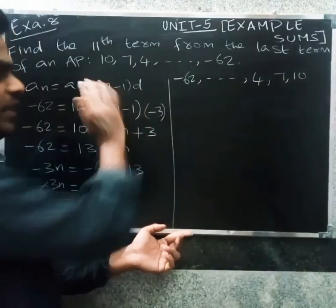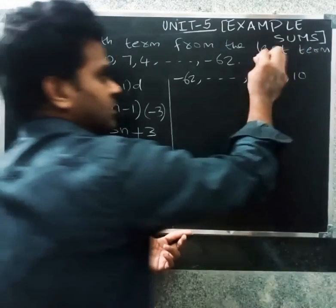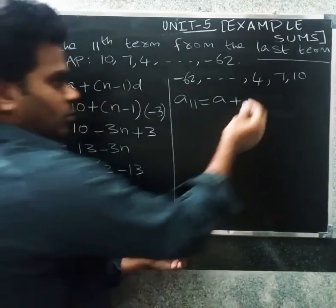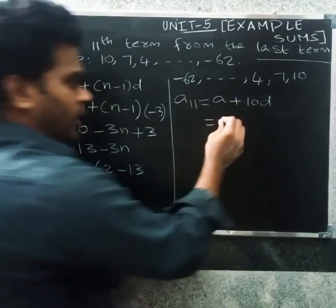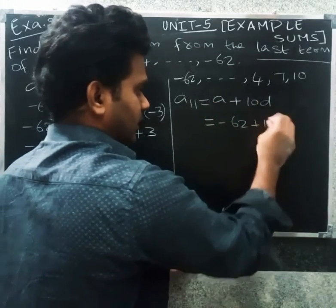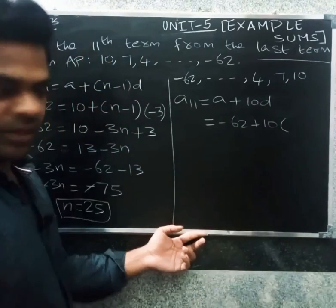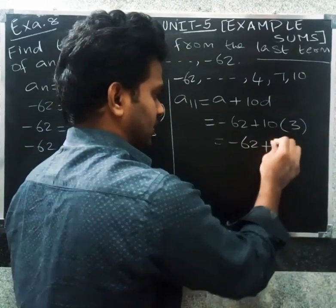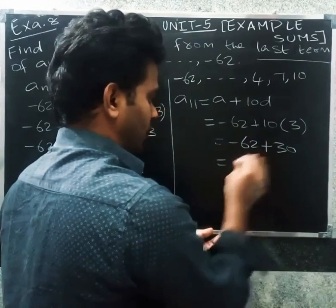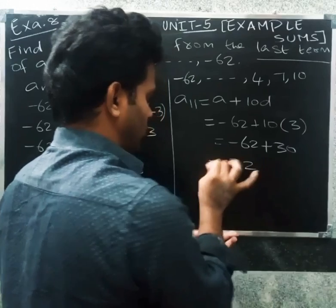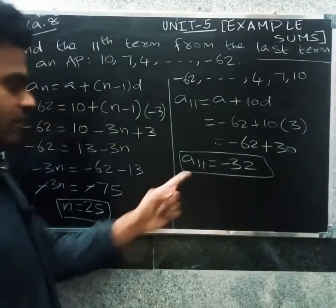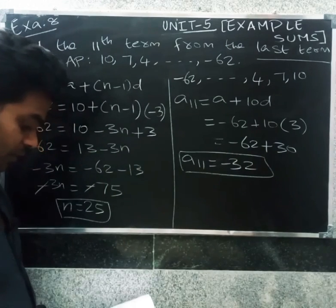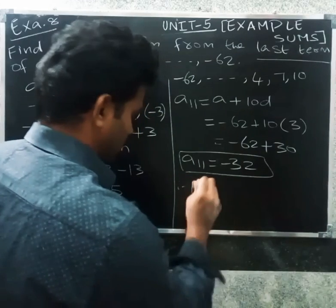To find the 11th term from the last, we reverse and use a₁₁ = a + (n−1)d, where a = −62 and d = 10 − 7 = 3 (reversed direction). So a₁₁ = −62 + 10×3 = −62 + 30 = −32. Therefore the 11th term from the last of the AP is −32.